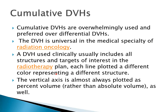The preference is usually the cumulative DVH, and this is what clinicians and most physicists understand. Cumulative DVH is overwhelmingly used and preferred over differential DVH. DVH is universal in the medical specialty of radiation oncology. It is used clinically and usually includes all structures and targets of interest in the radiotherapy plan. Each line is plotted in a different color representing a different structure, and the vertical axis is almost always plotted as percent volume.